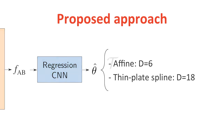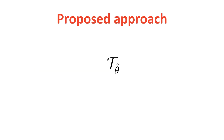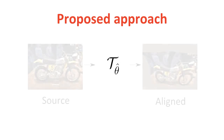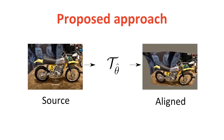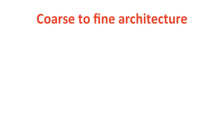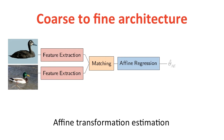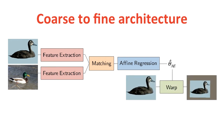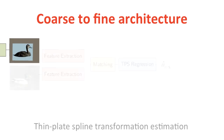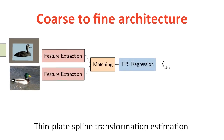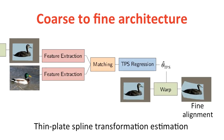Finally, using this estimated transformation, we can align the source image with the target image. We can apply this same approach in a coarse-to-fine manner, starting with estimating an affine transformation to obtain a coarse alignment, and then repeating the same procedure to estimate a thin-plate spline transformation to produce a fine alignment. The final transformation is then the composition of the coarse and fine transformations.